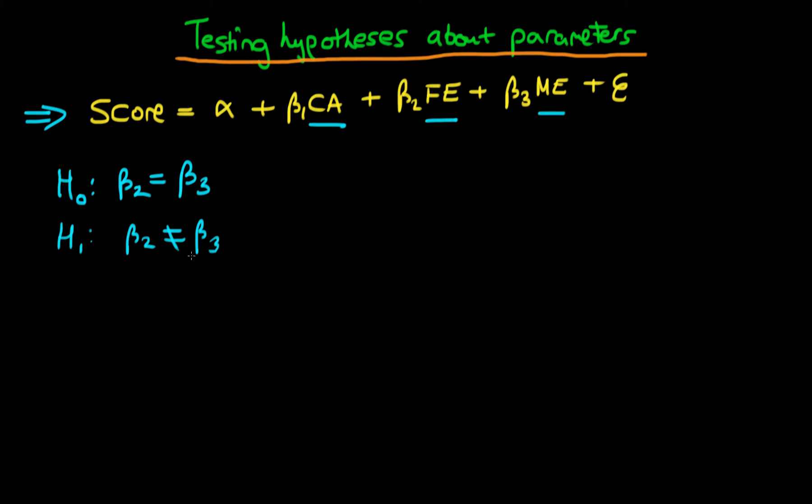We spoke about one way of doing this, which was to form a t-statistic which was equal to beta2 hat minus beta3 hat divided by the standard error of beta2 hat minus beta3 hat.